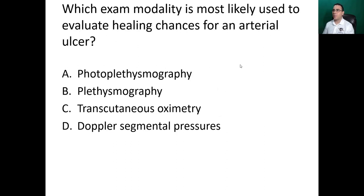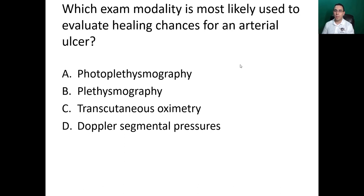Which exam modality is most likely used to evaluate healing chances for an arterial ulcer? It also tells you if the patient is a good candidate for hyperbaric oxygen (HBO) therapy. Options: A — photoplethysmography (PPG), B — plethysmography, C — transcutaneous oximetry, D — Doppler segmental pressures. The answer is C — transcutaneous oximetry.